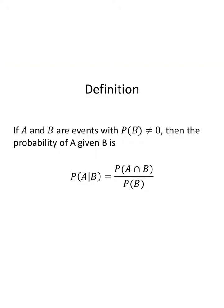Let's start with the definition. If A and B are events, with the probability of B not zero — so probability of B has to be possible — then the probability of A given that B occurred is written as A such that B, which equals the probability of the intersection of A and B divided by the probability of B.